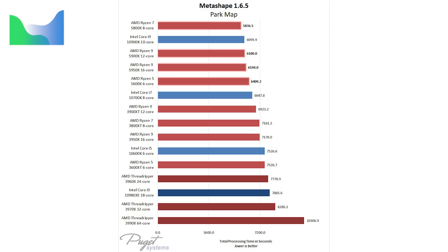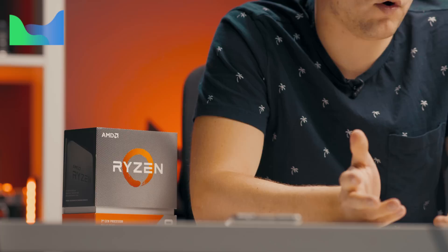Agisoft Metashape. The Ryzen 7 5800X is the fastest processor Puget Bench has tested for working with maps. The 5950X and 5900X are slightly faster when dealing with more complex models. The only similarly performing CPU from Intel is the 10900K, but for price and performance there's no reason to choose it over the 5800X. The same 128GB RAM limit applies to Ryzen processors — if you need more RAM, the Intel 10900K with more RAM capacity may be worth considering.